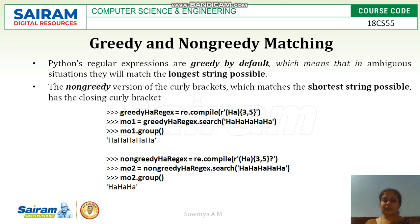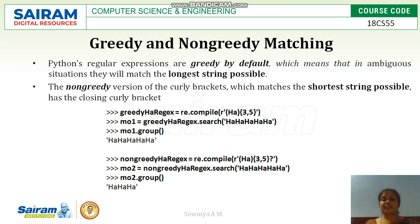If you want non-greedy matching — that is, matching the lesser value — for a pattern like 'ha{3,5}', you want it to match three instead of five. To make matching non-greedy, add a question mark after the curly braces. The question mark causes the pattern to match the minimum number of occurrences, so the search will find the minimum occurrences only. This is called non-greedy matching.